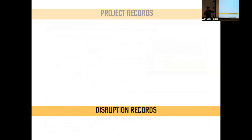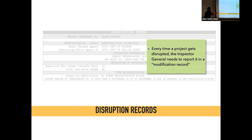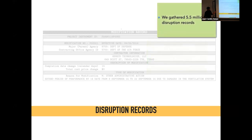Beyond the 2 million projects and their characteristics, we also gathered disruption records — around 5 million disruptions. We know exactly when a project was disrupted, when it stopped, when it resumed, and the resulting delay. These disruptions are recorded by an inspector general — they are not self-reported by the project participants. Every project has an inspector who goes and records whether there was an issue, what type of delay occurred, what caused it, and what the cost was.